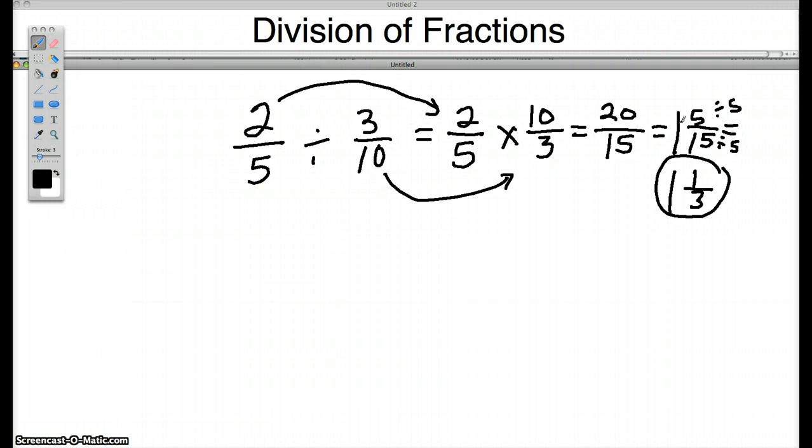Now this problem can actually be done in a simpler way if you know how to what I call cross reducing. And so let's write the problem again down here that we ended up with as 2/5 times 10/3. Rather than doing the multiplication straight across to start, I'm going to look diagonally at this number and this number, the 2 and the 3, and ask myself, can I reduce or simplify the 2 and the 3?